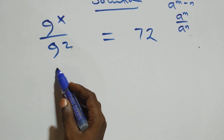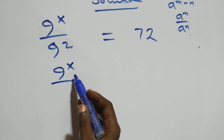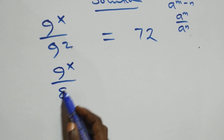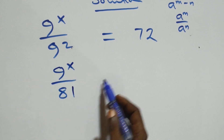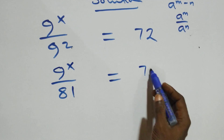This is the same thing as 9 raised to power x over 9 squared — that is, 9 times 9, which is 81 — equals 72.